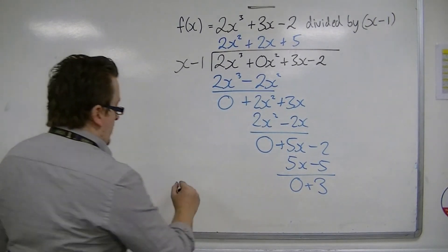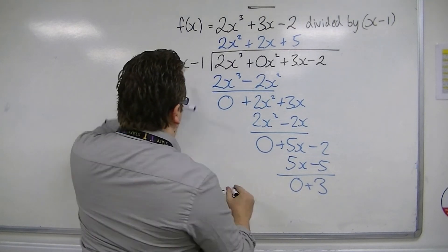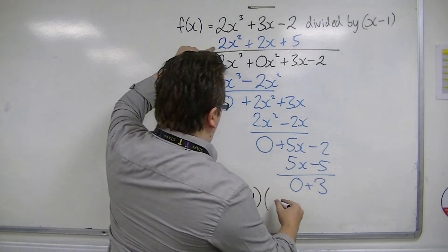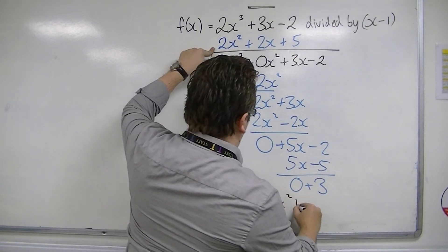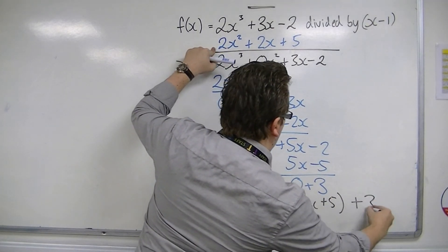So that means that f of x can be written as x minus 1 times 2x squared plus 2x plus 5, plus the remainder of 3.